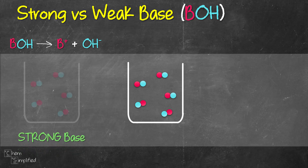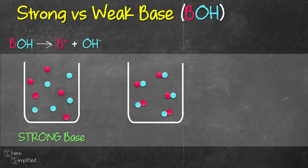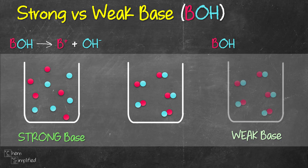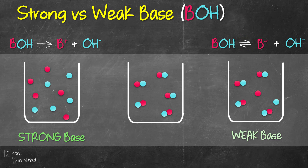In a strong base the dissociation is 100% or very close to it, so all the base splits up into B+ and OH- and no BOH remains. In a weak base the dissociation is very small — maybe only one out of five BOH molecules splits up. Therefore we write the equation with an equilibrium arrow indicating the reaction goes back and forth. The only difference in the dissociation equations is the arrow: unidirectional for strong base, equilibrium arrow for weak base.